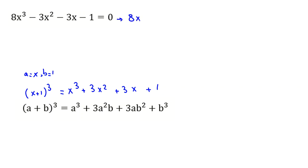So if we move all terms except 8x³ to the right-hand side, it will be 3x² + 3x + 1. We have these terms on the right-hand side.